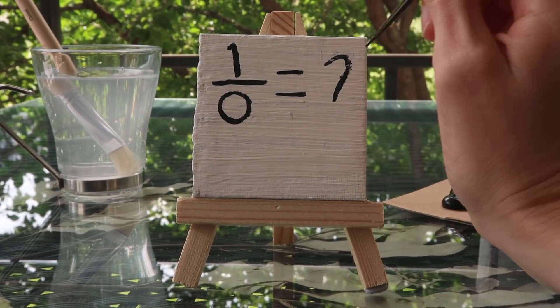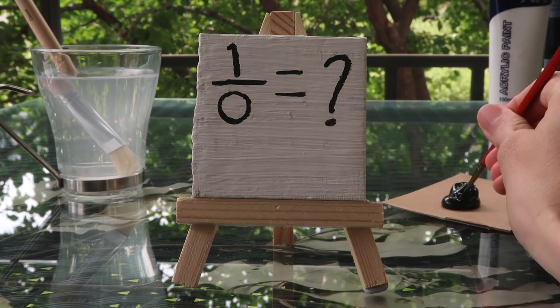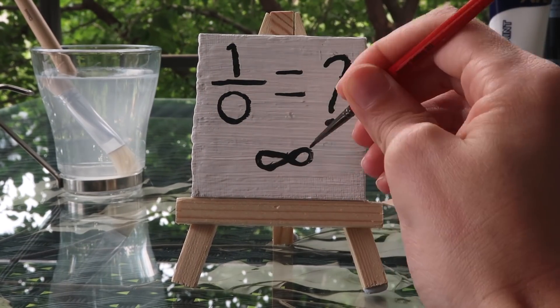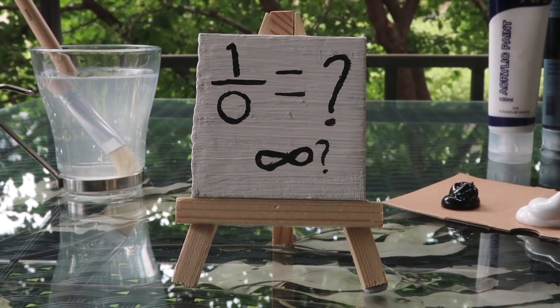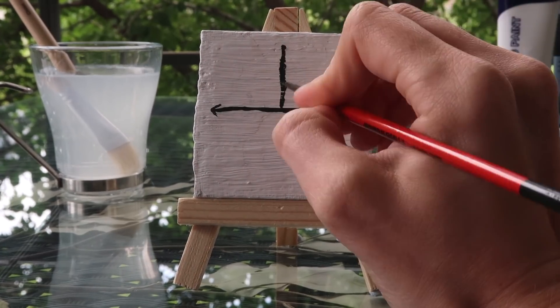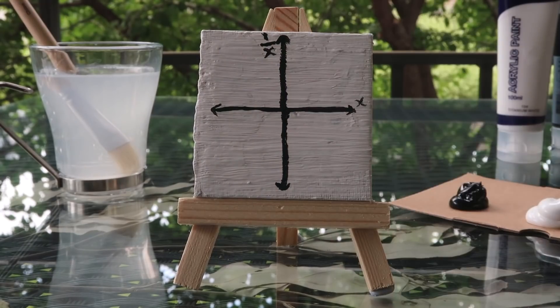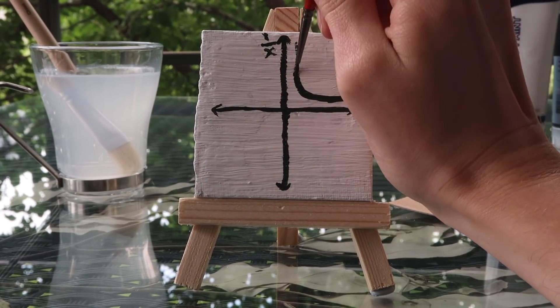So will 1 over 0 be as large as infinity? It certainly looks that way. If we draw a graph, the smaller our number on the bottom of the fraction, the bigger the fraction seems to get.